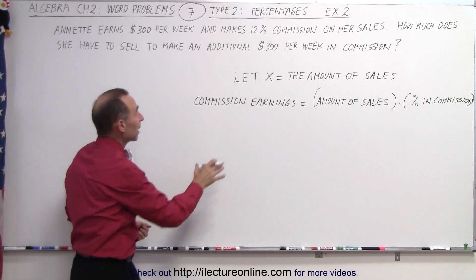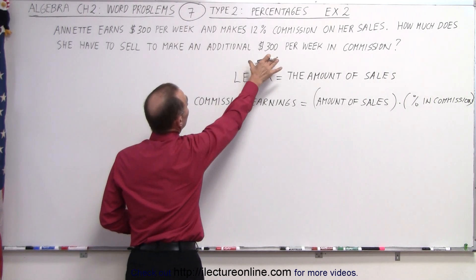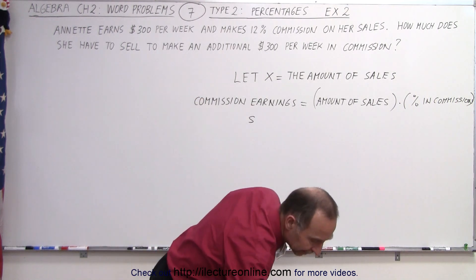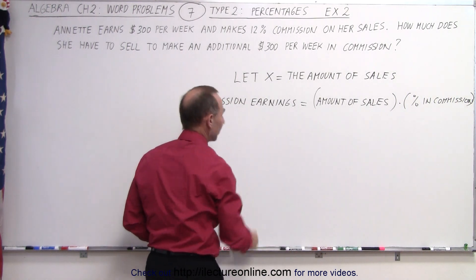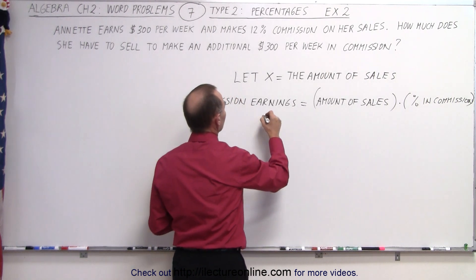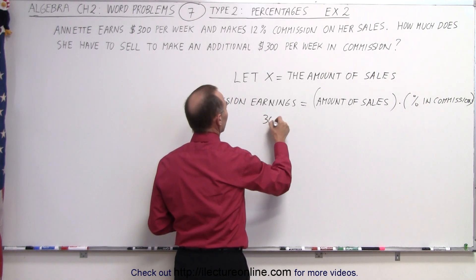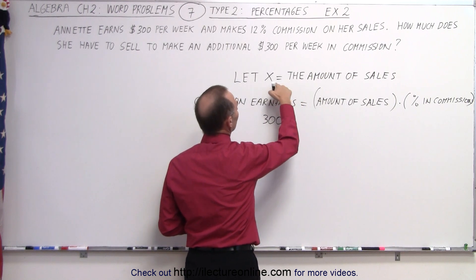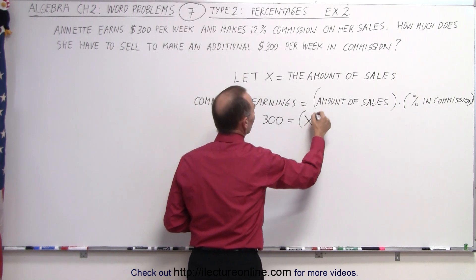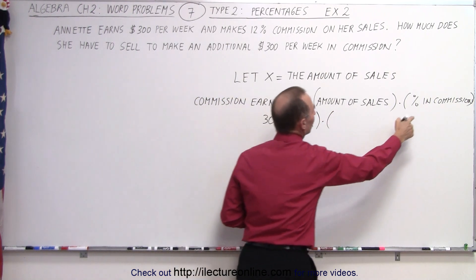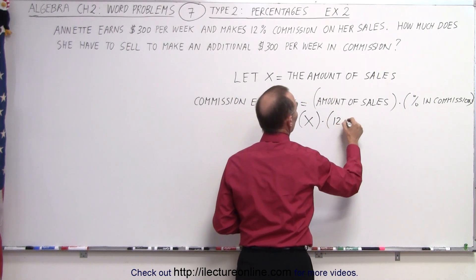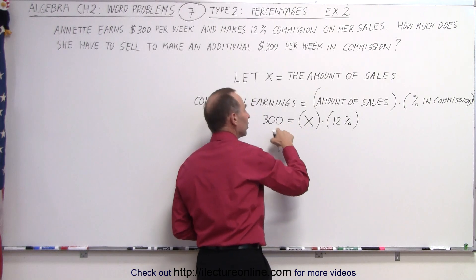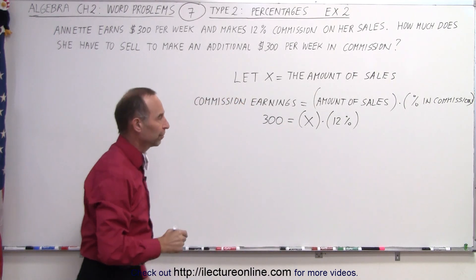Now we know that the amount of commission earnings needs to be $300 per week. So the amount earned from commission is 300. That equals the amount of sales, which is defined as X, multiplied times the percent in commission, which in this case is 12%. So 12% times the sales should give you earnings in commission.